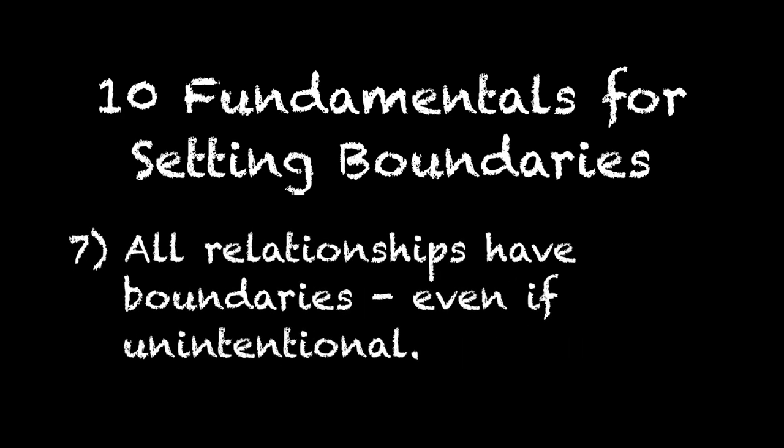Number seven: all relationships have boundaries regardless of how intentional we are when setting them. Essentially every relationship has some boundary — some are more enmeshed, some are more rigid, some are clear, some are unclear. Regardless, every relationship has some form of boundaries. And since they're there, we really have to be intentional when we're setting them. If we're not intentional, then perhaps the child gets to determine where that boundary is set.